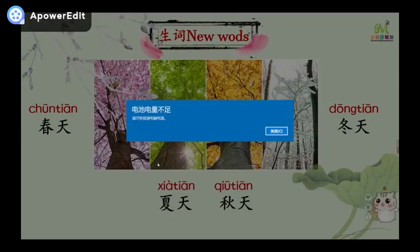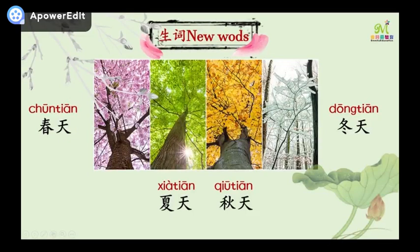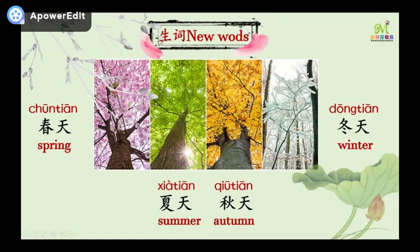春天，夏天，秋天，冬天. What do the words mean? 春天 — spring. 夏天 — summer. 秋天 — autumn. 冬天 — winter. Which season do you like? I like spring — 我喜欢春天. I like summer — 我喜欢夏天. I like autumn — 我喜欢秋天. I like winter — 我喜欢冬天.